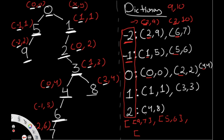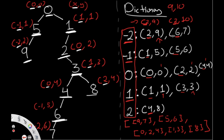Continuing: key 0 gives us nodes 0, 2, 4. Key 1 gives nodes 1 and 3 — already sorted, so we add 1 then 3. Key 2 has only one node, 8. The critical rule is: only when both horizontal AND vertical positions match do we sort by node value; otherwise we sort by vertical distance. That's the complete vertical traversal.